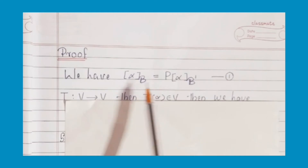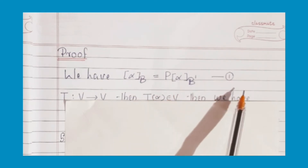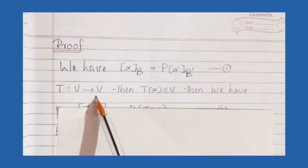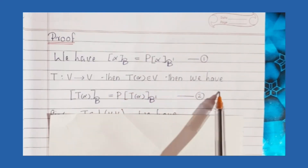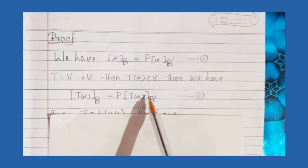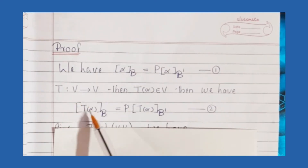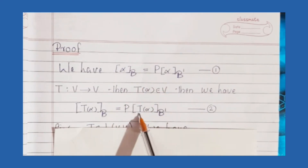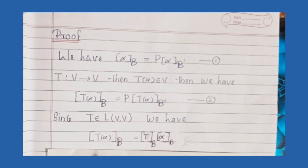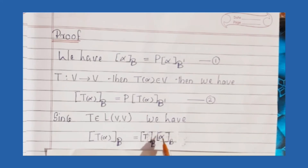In the proof, we have the matrix of alpha related to B is equal to P times the matrix of alpha related to B'. Putting this as equation number 1. In this statement, P is a linear transformation from V to V. Then T of alpha belongs to V, and we have the matrix of T of alpha related to B is equal to P times the matrix of T of alpha related to B'. Putting this as equation number 2.